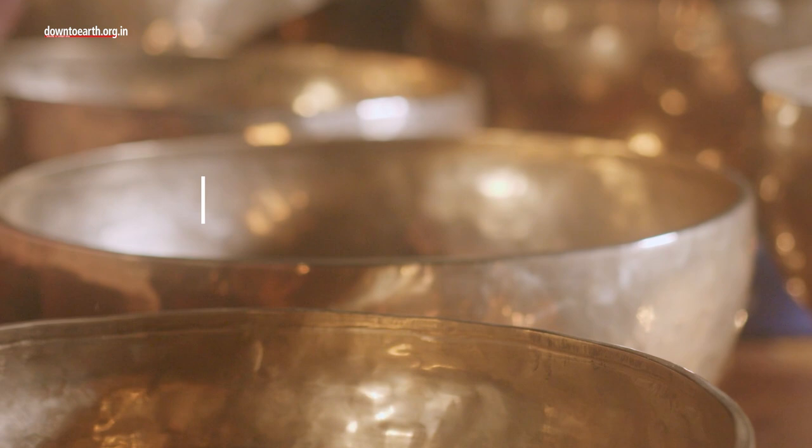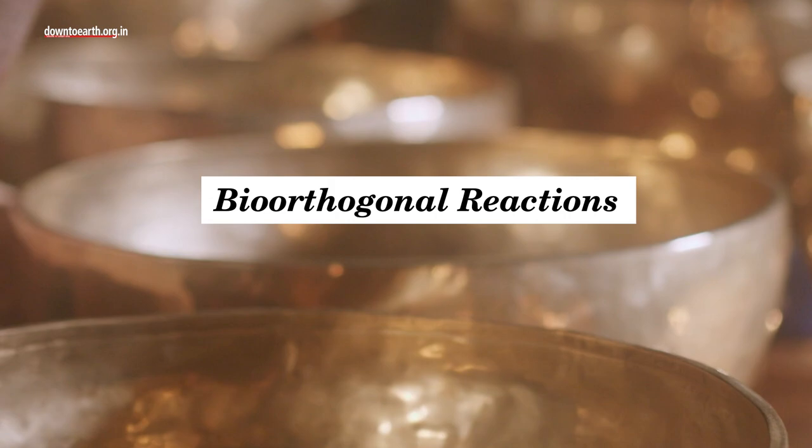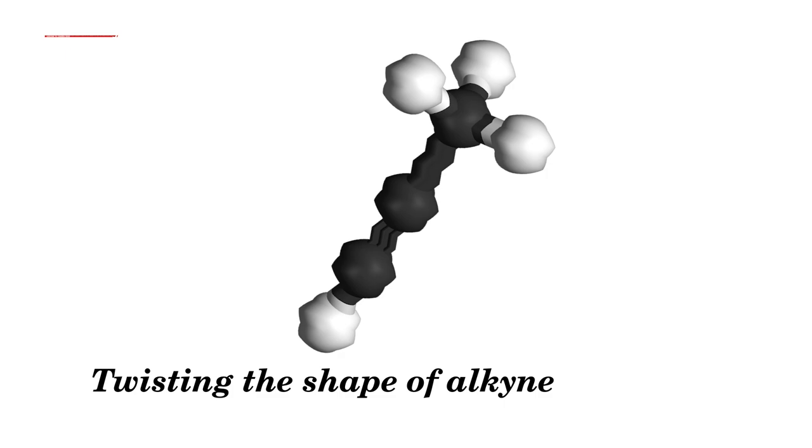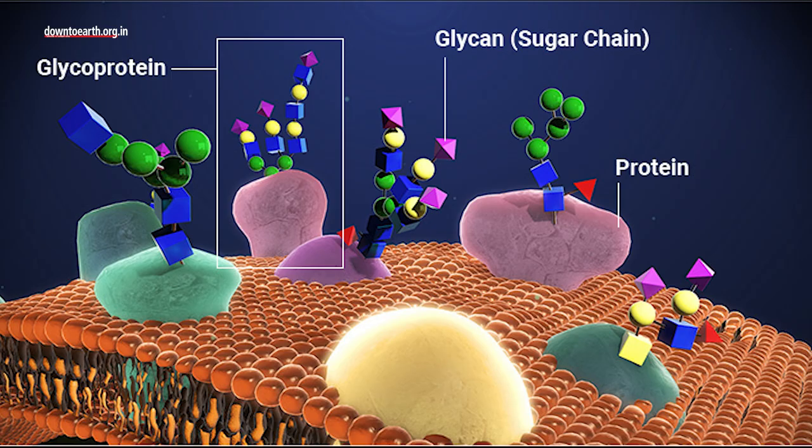Since copper is toxic to living beings, Bertozzi proposed bio-orthogonal reactions which allow Click Chemistry within living cells without needing a metal by twisting the shape of alkyne, allowing it to become more reactive.